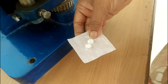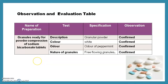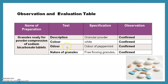After the laboratory procedure, we move to the observation and evaluation table. The table contains: name of preparation — granules ready for compression of sodium bicarbonate tablet. Tests performed: description — granule powder, confirmed. Color — white, confirmed. Odor — odor of peppermint, confirmed (menthol was added). Nature of granules — free-flowing granules, confirmed.